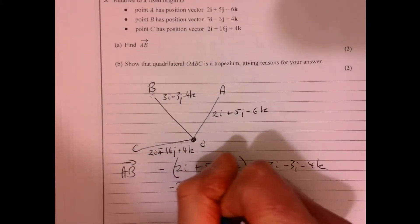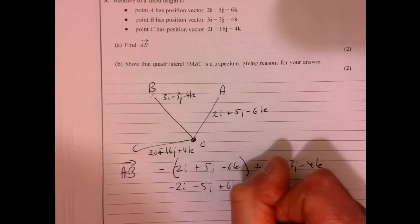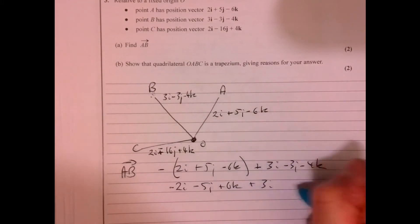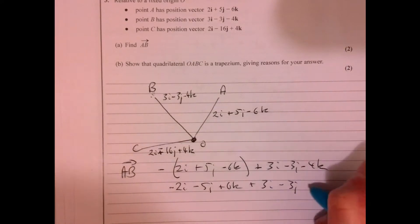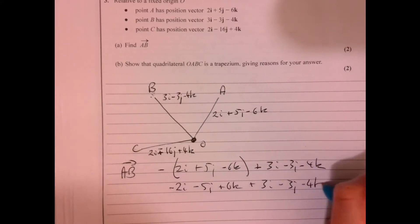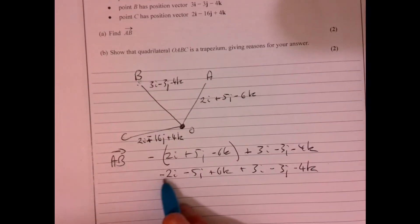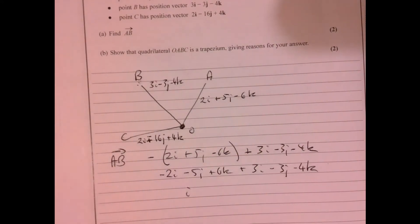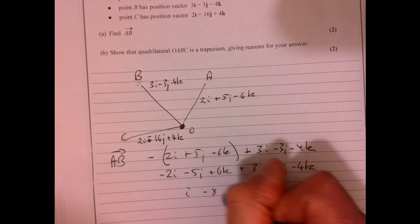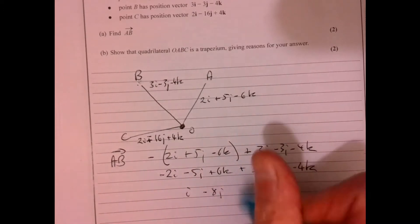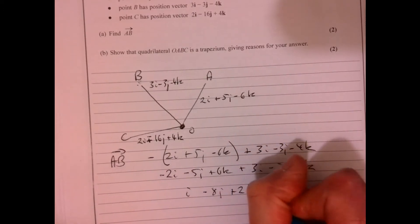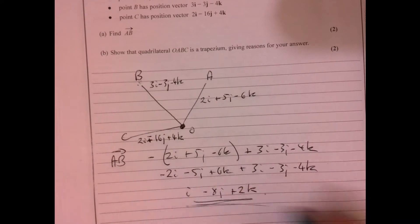So minus 2i minus 5j plus 6k. Just write the whole thing out. Don't make silly mistakes. Piece it all together. What have we got? We've got i, minus 8j, and plus 2k. There we go, that's part A done.